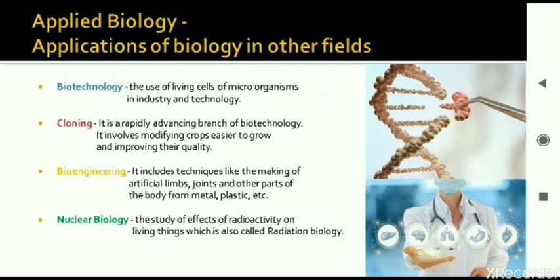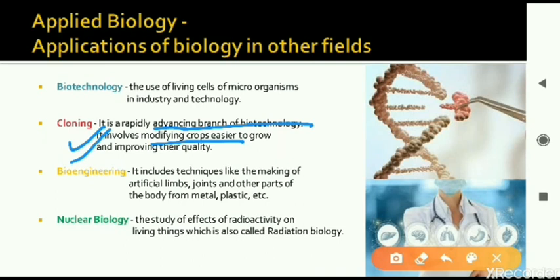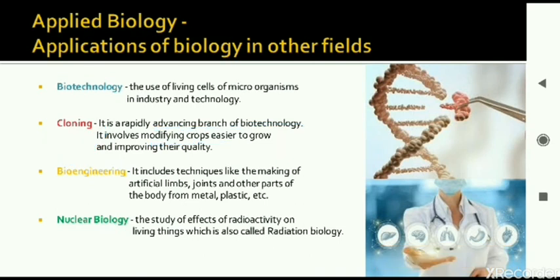Next, a sub-category of biotechnology is called cloning. Cloning is a branch of biotechnology and it is used for modifying crops to grow easily and improving the quality of crops. Better crops can be grown — if any crop is suffering from a disease, then we can get a better variety of crop.